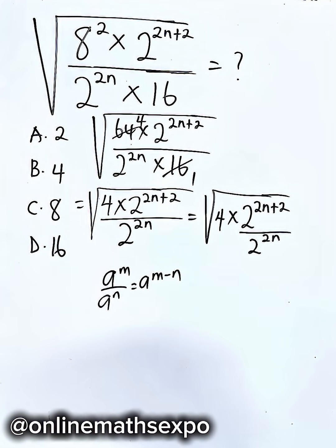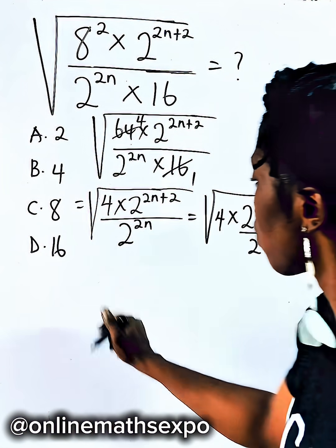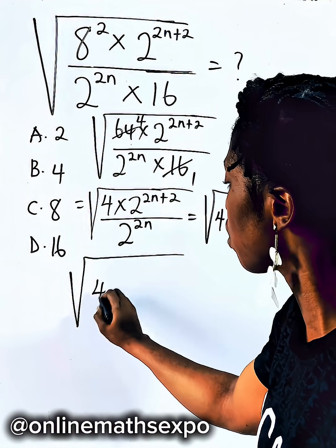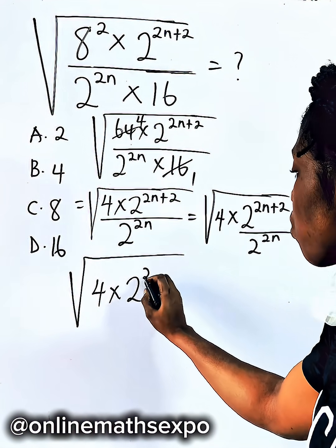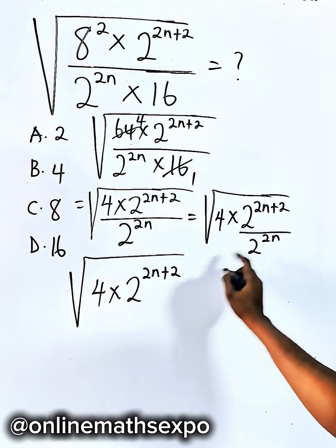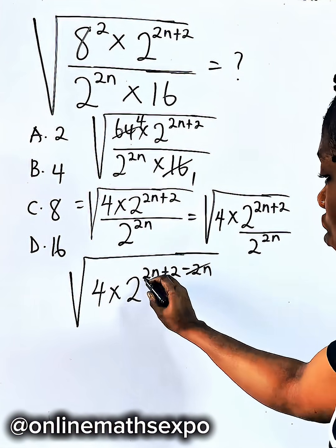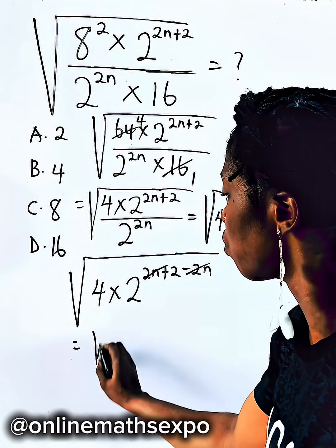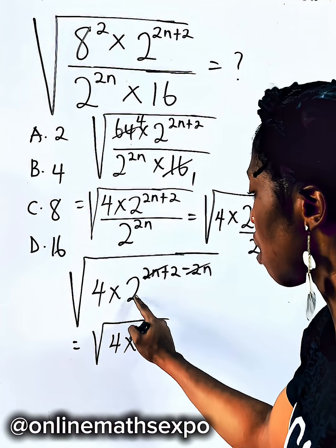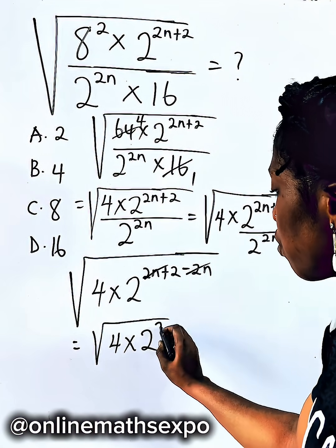So applying it here, we are going to have, this gives us 4 times 2 to the power of 2n plus 2 subtract. So if you do that, 2n minus 2n is gone. So you have root of 4 times 2 raised to power of this 2.